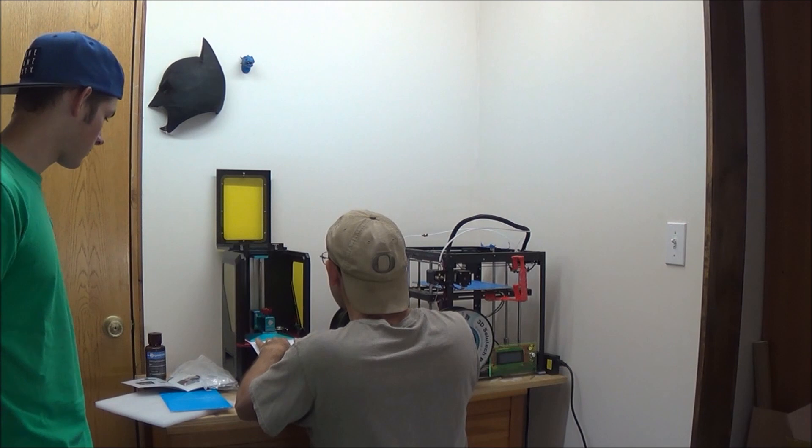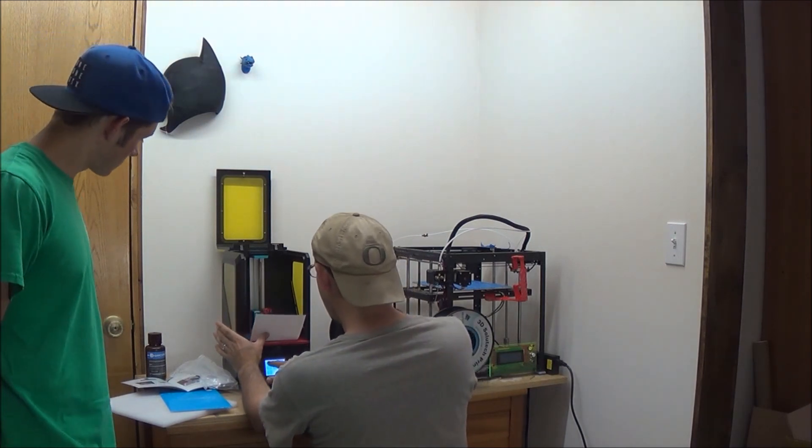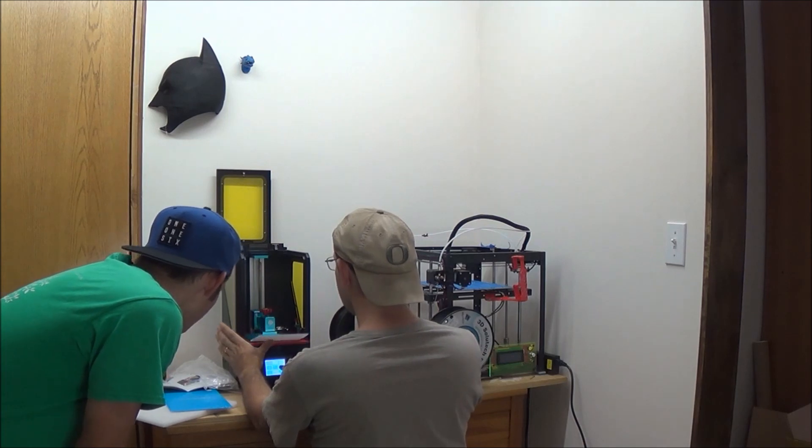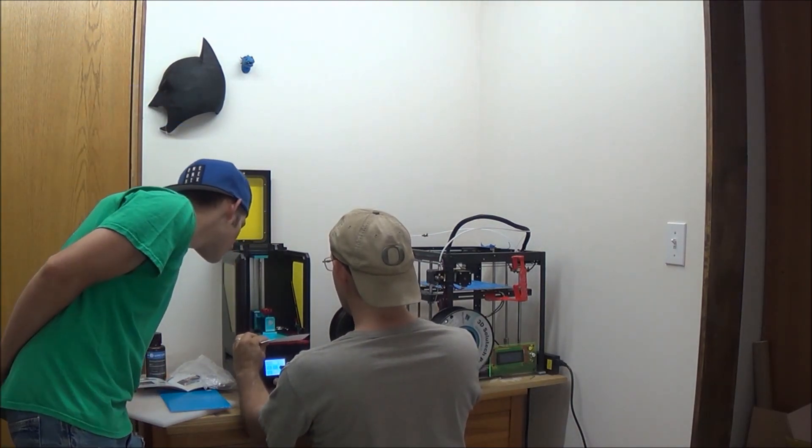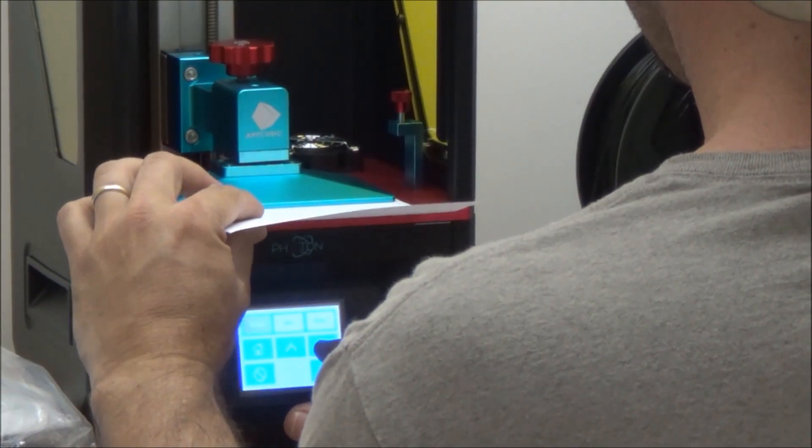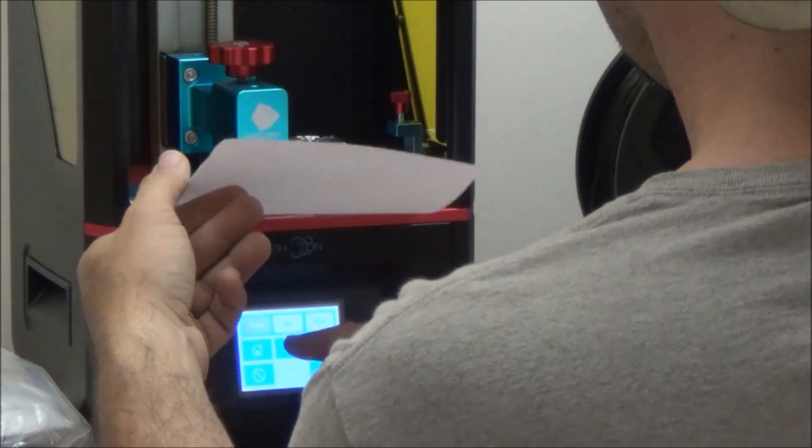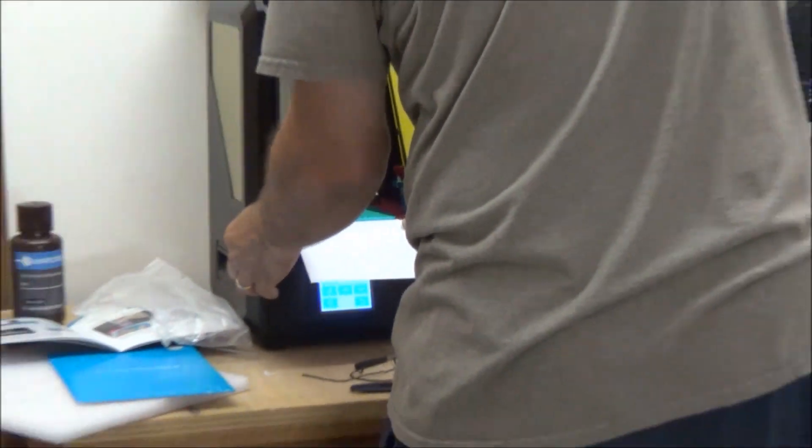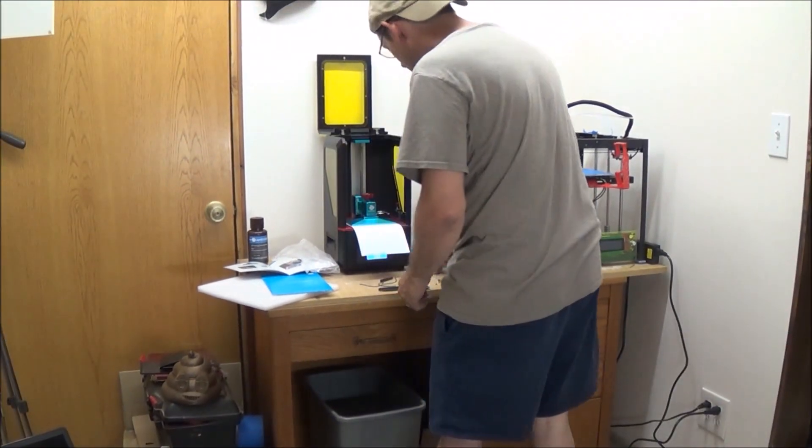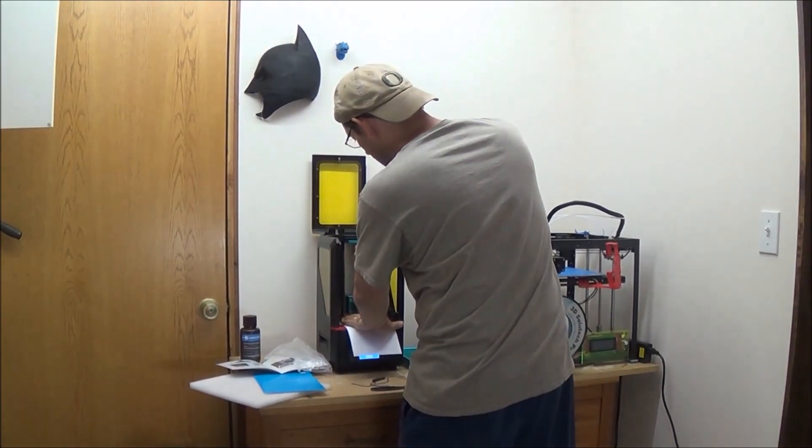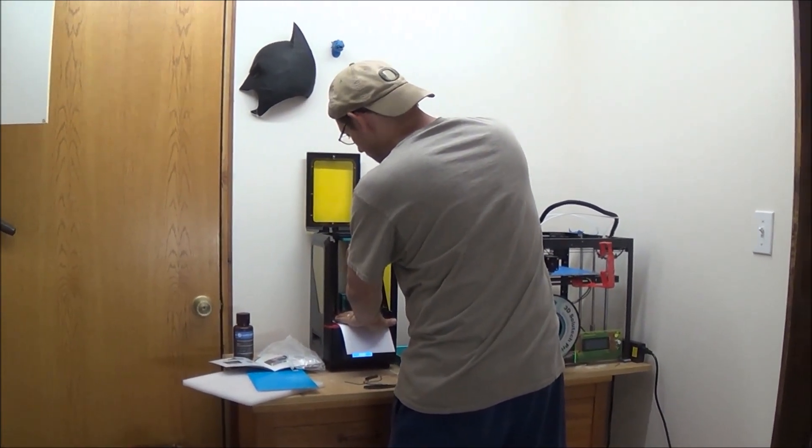We're going to slip the paper underneath there and then by increments of 0.1 millimeter we're going to drop it down. So that feels like there's enough resistance there. Now I'm going to use the Allen wrench and I'm going to try to put even pressure on this guy and then tighten it.